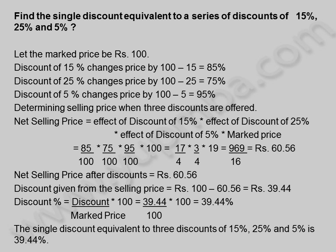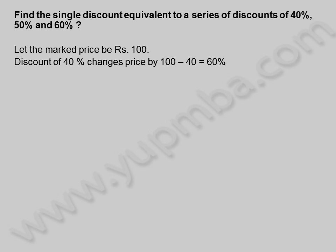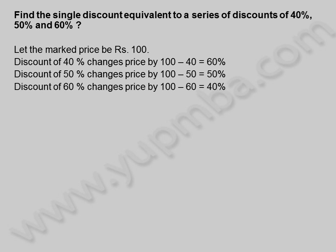Let us see another example. Find the single discount equivalent to a series of discounts of 40%, 50% and 60%. Let the marked price be 100 rupees. Discount of 40% changes price by 100 minus 40, is equal to 60%. Discount of 50% changes price by 100 minus 50, is equal to 50%. Discount of 60% changes price by 100 minus 60, is equal to 40%.